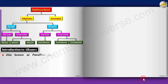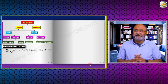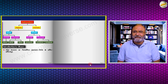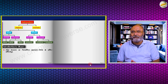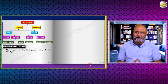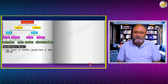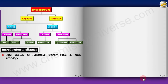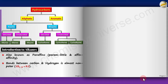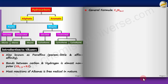Let's look at alkanes. These are also known as paraffins, meaning 'little affinity' — alkanes are very less reactive. Most of our time will be spent on their preparation; very few reactions are actually useful for making products. The C–H bond is almost non-polar because the electronegativity difference is just 0.2, so most reactions of alkanes are free radical in nature. The general formula is CₙH₂ₙ₊₂.